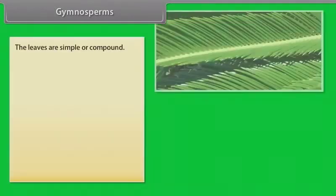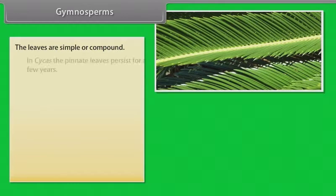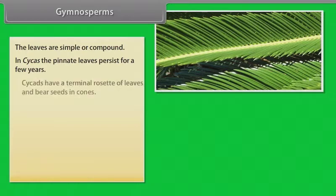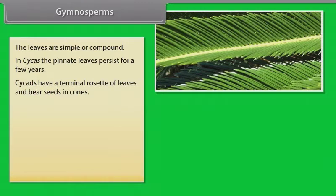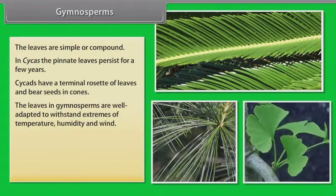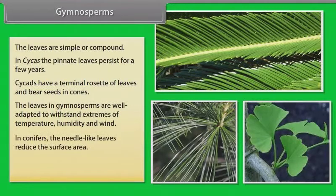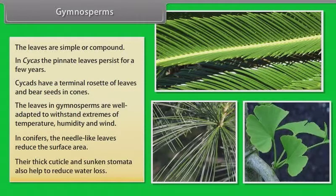The leaves are simple or compound. In Cycas, the pinnate leaves persist for a few years. Cycas have a terminal rosette of leaves and bear seeds in cones. The leaves in Gymnosperms are well adapted to withstand extremes of temperature, humidity and wind. In conifers, the needle-like leaves reduce the surface area, and their thick cuticle and sunken stomata also help to reduce water loss.